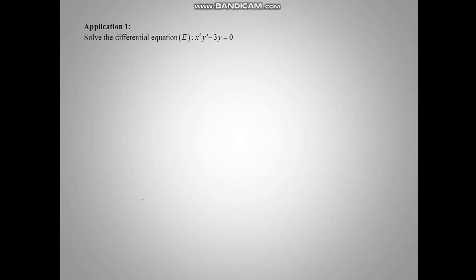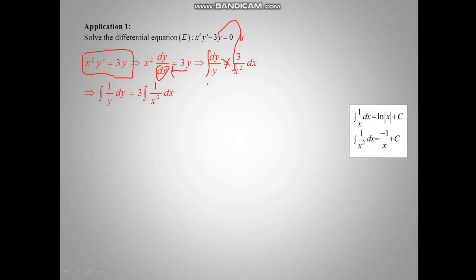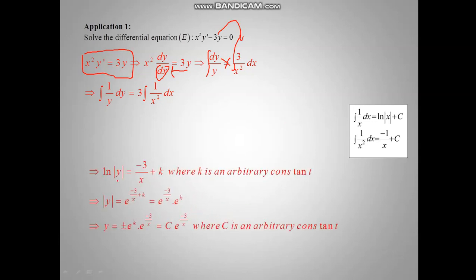Application: solve the differential equation x squared y prime minus 3y equal to 0. First, take 3y to the other side. After that, replace y prime by dy over dx, take y to one side and dx and x squared to the other. By cross multiplication we get x squared y prime equal 3y. Now integrate both sides: the integral of dy over y is ln of absolute value of y; the integral of 3 over x squared is minus 3 over x.